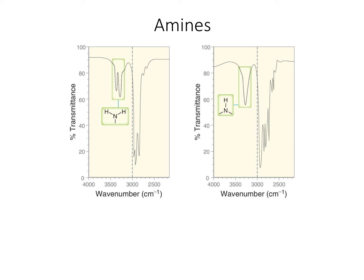The last functional group we look for is amines. A primary amine gives a double peak around 3,400 wavenumbers, while a secondary amine gives a single peak also around 3,400 wavenumbers. These can be close to sp hybridized carbon CH stretches and to alcohols, but it's also about shape. Amine signals tend to be a bit broader than sp CH stretches, while alcohols are broader still and generally much more intense — that's how you distinguish a secondary amine from an alcohol.